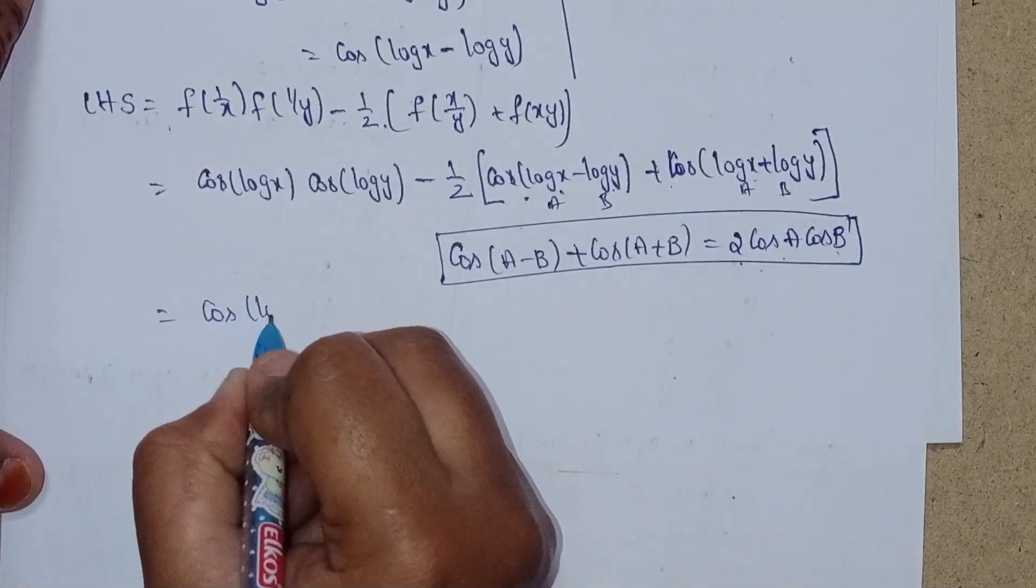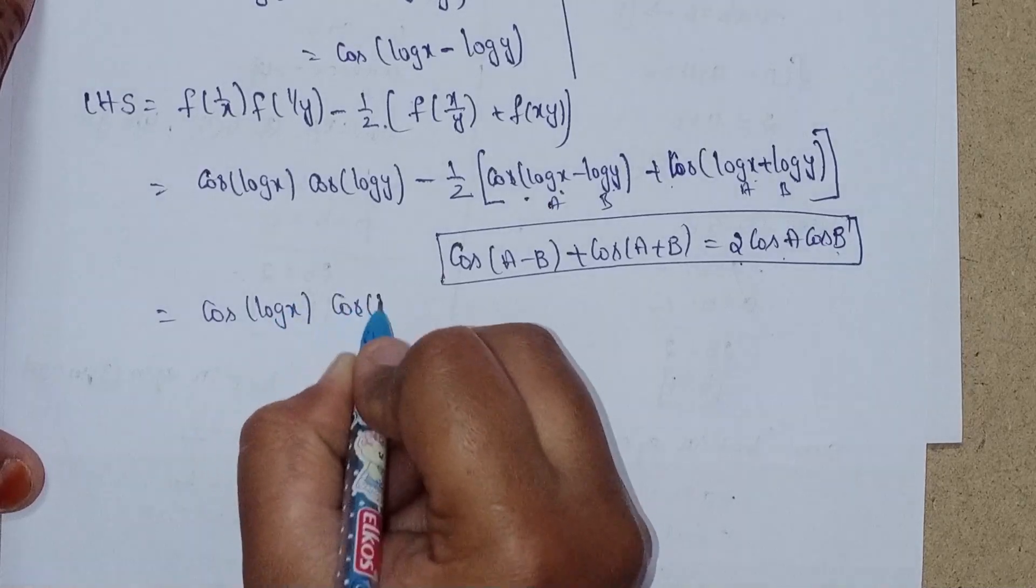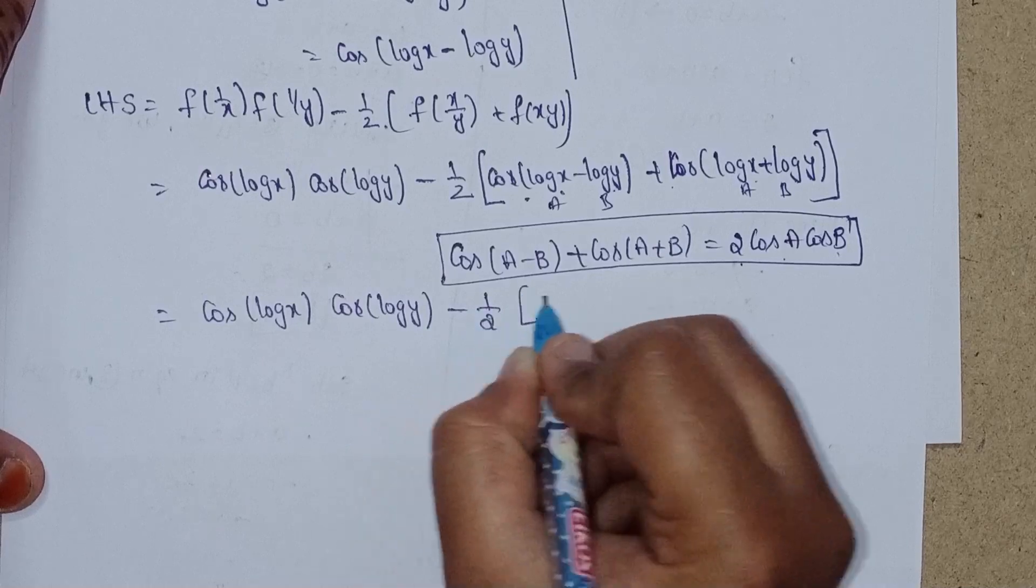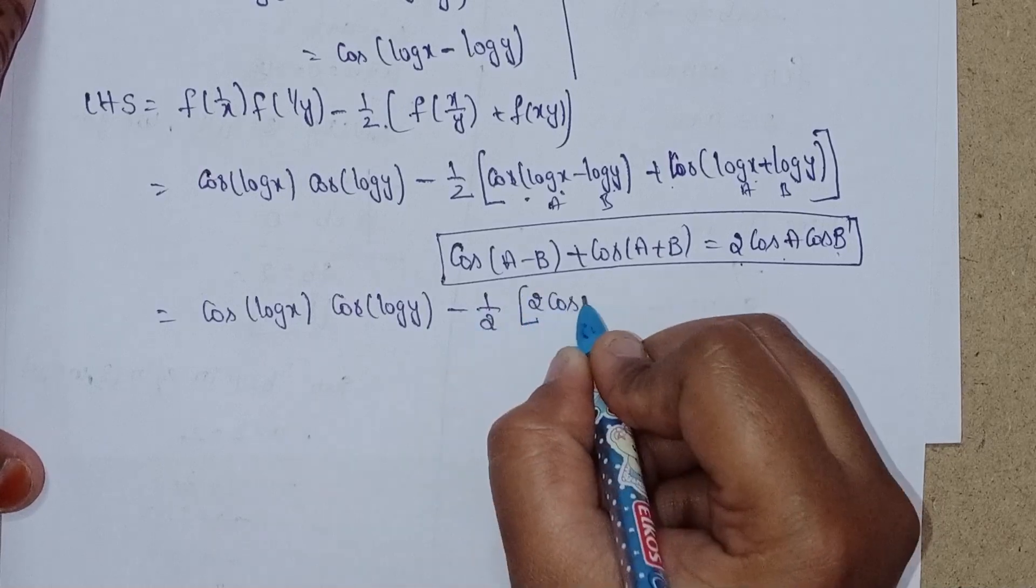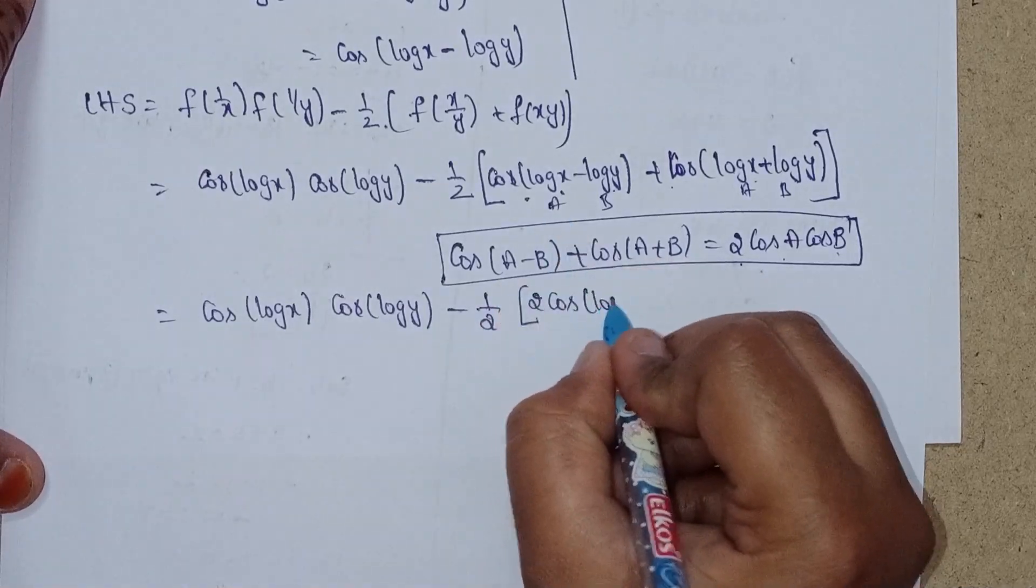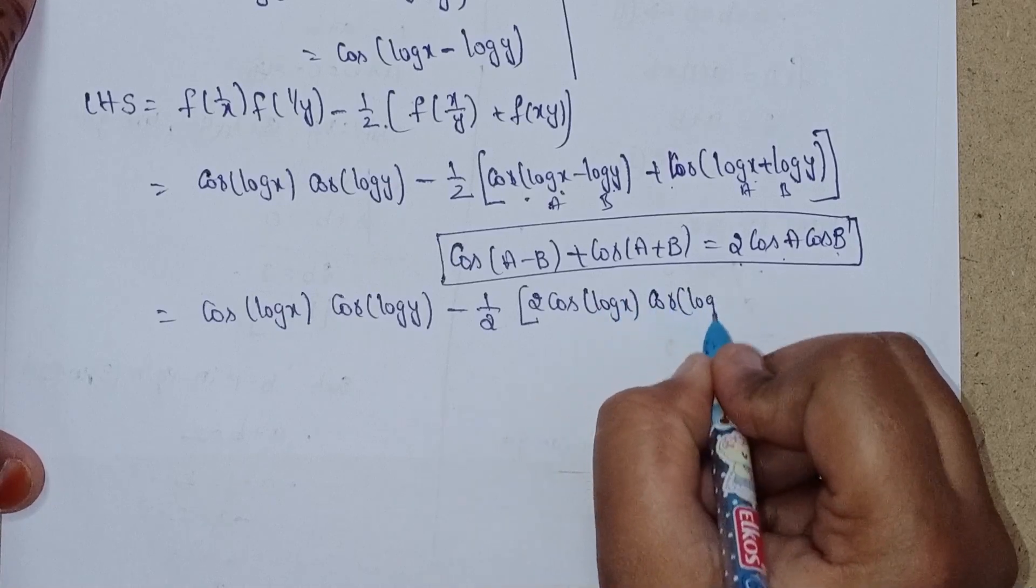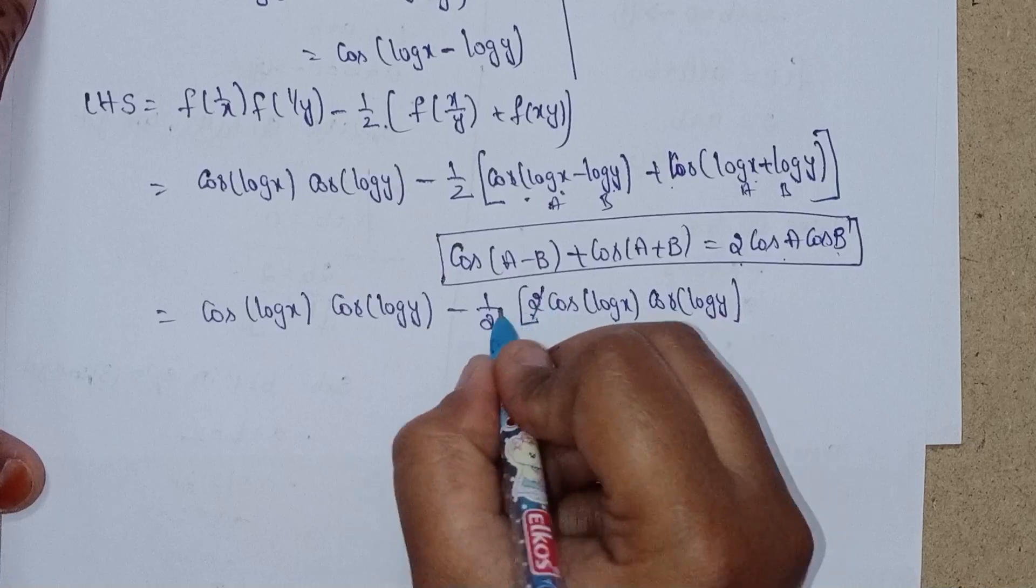This gives us cos(log x)cos(log y) - 1/2 * [2cos(log x)cos(log y)]. The 2 cancels with 1/2.